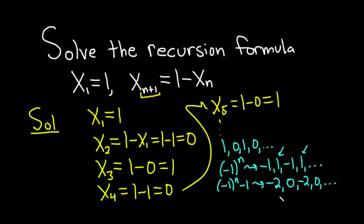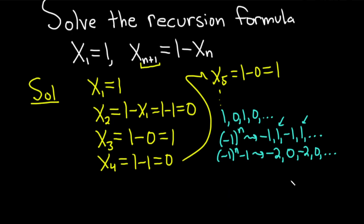And then let's make these negative 2s into 1s. We can do that by dividing by negative 2. So this will be negative 1 to the n minus 1 over negative 2. This will turn it into the sequence 1, 0, 1, 0. And that's because 0 divided by negative 2 is 0. Negative 2 divided by negative 2 is 1.